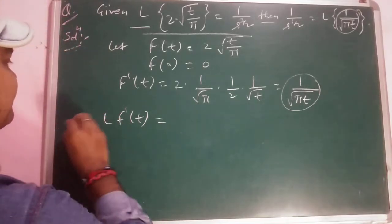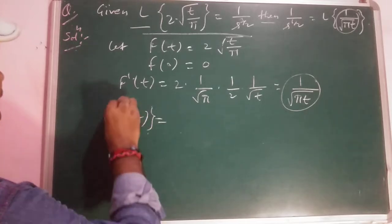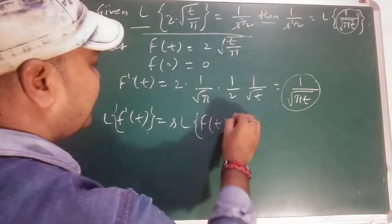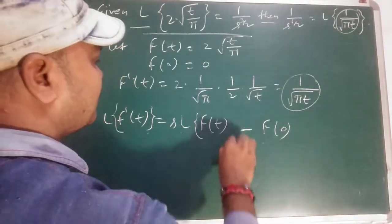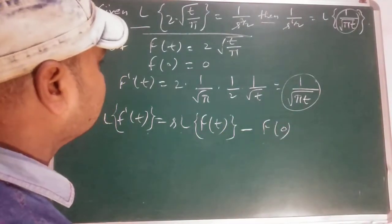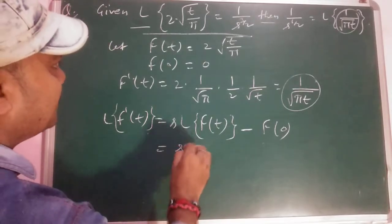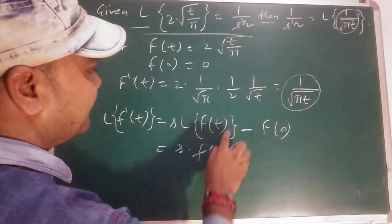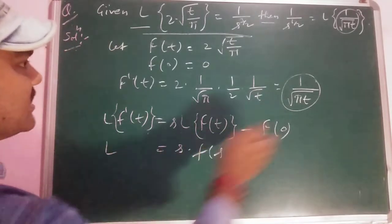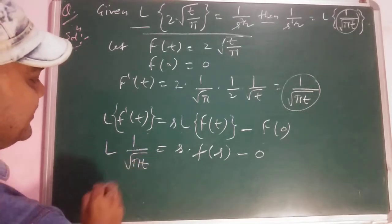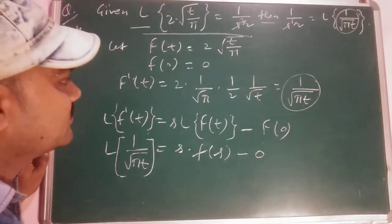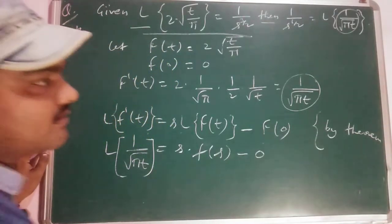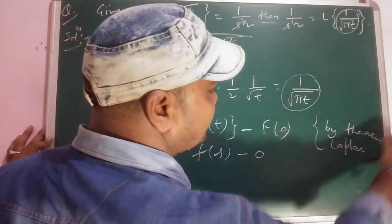Now taking Laplace of both sides, and using the Laplace of derivatives theorem: L{f'(t)} = s·L{f(t)} − f(0). Here f(0) = 0, and L{f(t)} = F(s) = 1/s^(3/2). So the right side equals s·F(s) − 0. The left side is L{1/√(πt)}. This formula is from the Laplace of derivatives theorem, which we covered earlier.